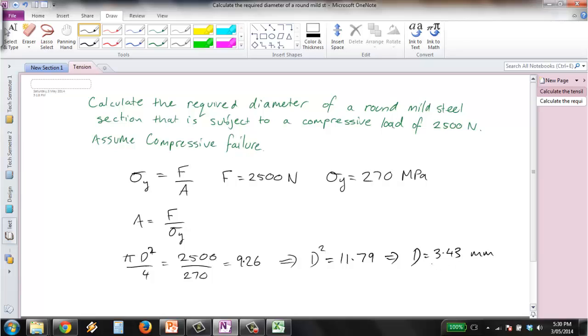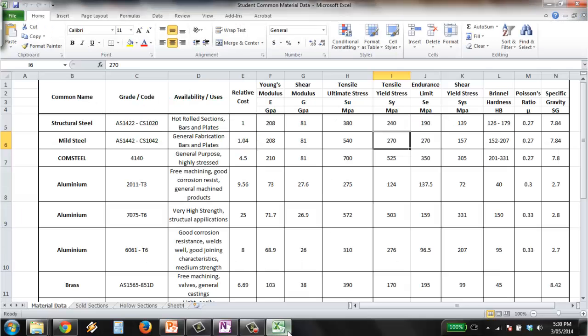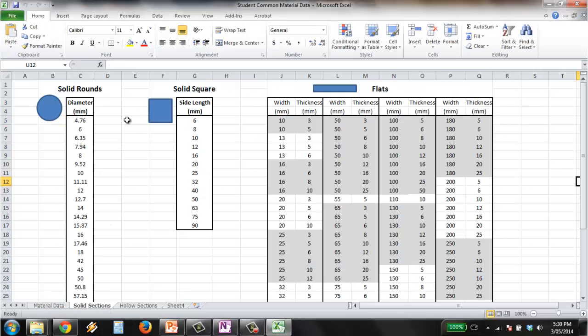That would be our minimum allowable diameter. But what we should do is go to our table, solid sections. And we've listed here what diameters are commonly available for some solid round sections. And we say here the smallest is 4.76 millimeters.